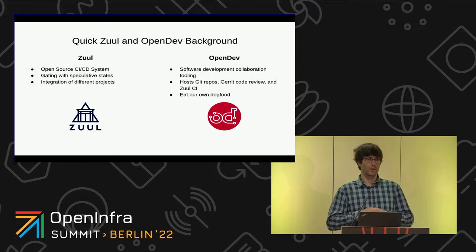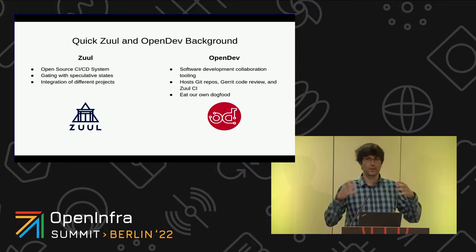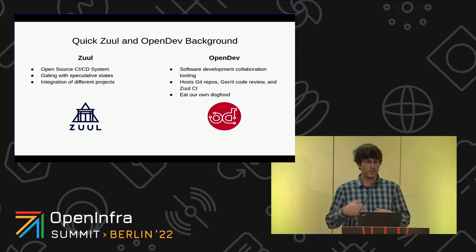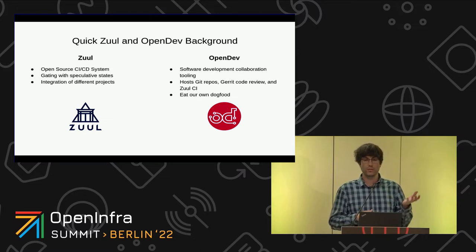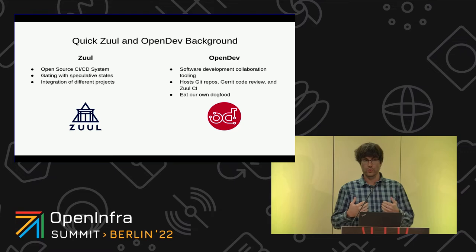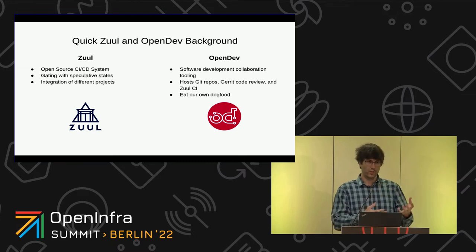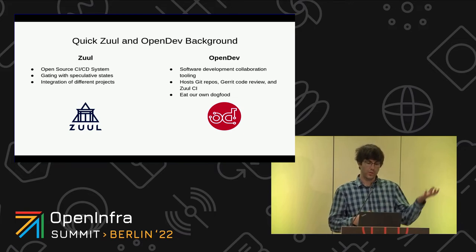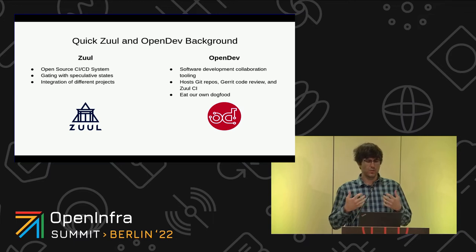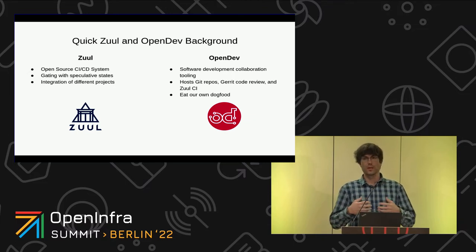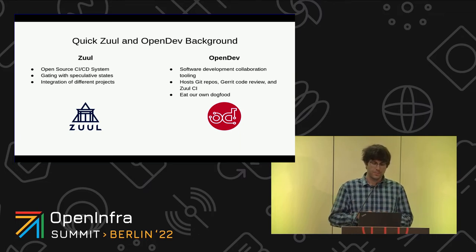OpenDev also grew out of OpenStack, and it is a software development collaboration tooling system. We host Git repositories, code review for those repositories, and continuous integration for that source code and development. Importantly to the talk today is that we eat our own dog food. We use OpenDev to deploy OpenDev, so the Gerrit code review system is deployed using Gerrit code review. We review the changes that modify Gerrit. Similarly with Zuul, we use Zuul to CI the changes that modify Zuul and that deploy Zuul. That makes us good Zuul users because we're familiar with how to use it. We're systems operators using DevOps to deploy into production.